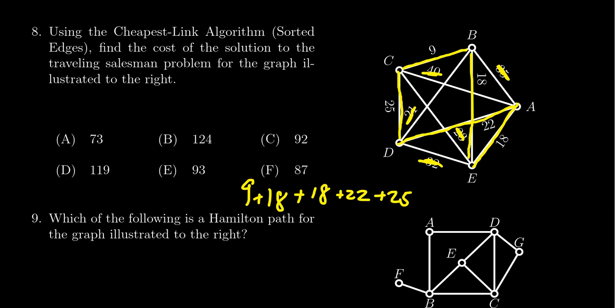You throw another 25 onto the sum. Now, as you add these all together: 9 plus 18 plus 18 plus 22 plus 25, that gives you 92. So the correct answer would then be choice C.